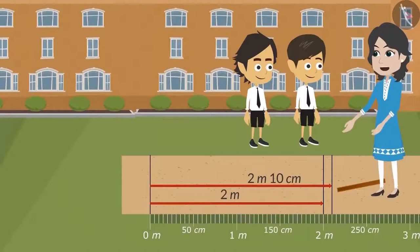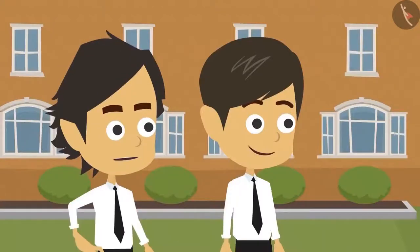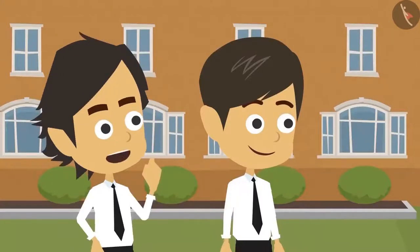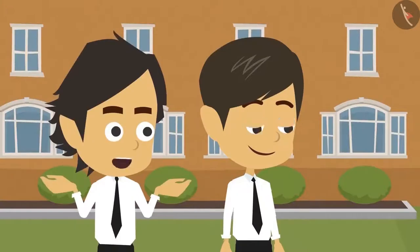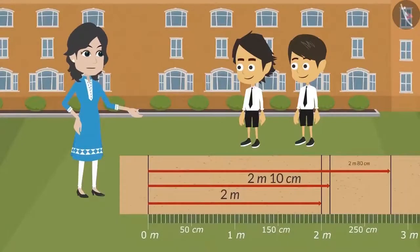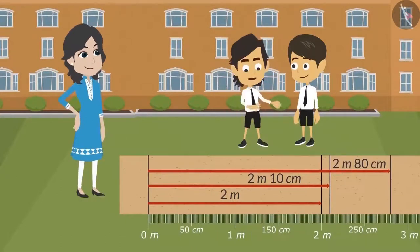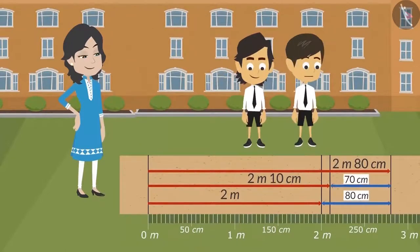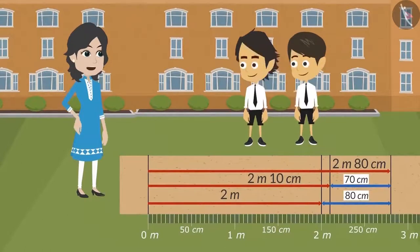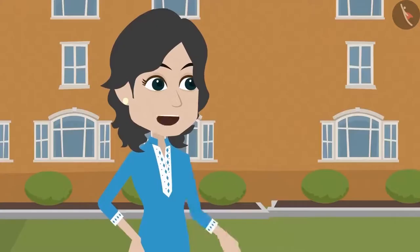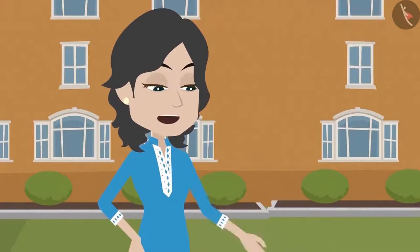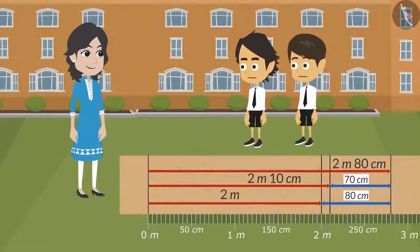You both can win the long jump competition. That is why I am saying that you need to practice. We will practice now. But how long did the winner of the previous competition jump? In the previous competition, the longest jump was 2 meters and 80 centimeters. At present, I can jump 2 meters. I will have to jump an additional 80 centimeters. And I will have to jump another 70 centimeters. This is last year's record. It is possible that this year somebody may jump longer. Therefore, keep practicing and try to jump the longest. Okay, madam.